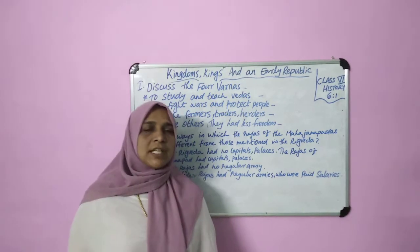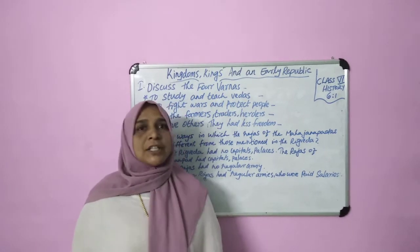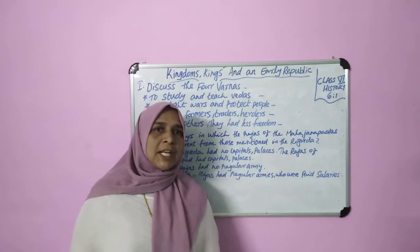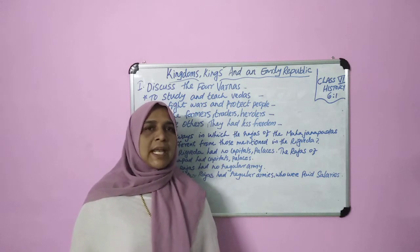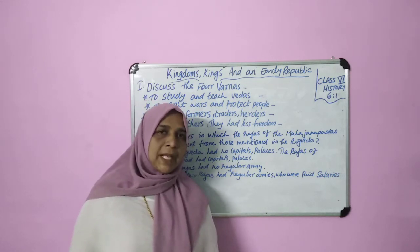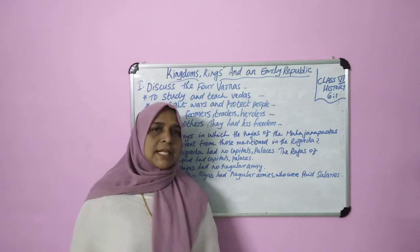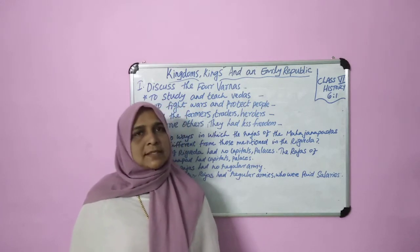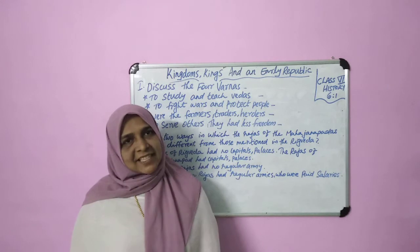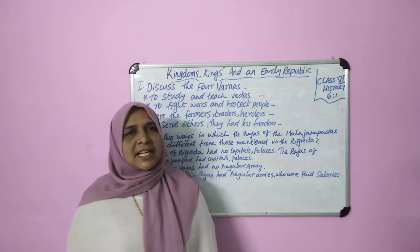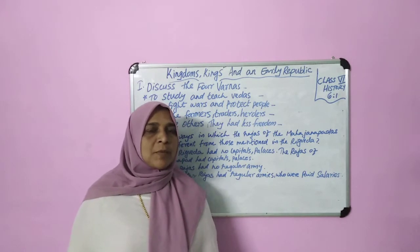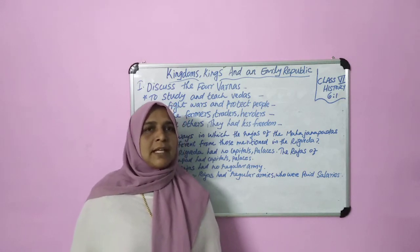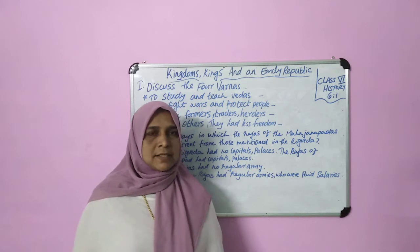Around 3000 years ago there were many different ways of choosing a raja. Some men became rajas by performing sacrifices like ashvamedha. Initially rajas were chosen by the jana, and some men performed sacrifices and became rajas. They then ruled the janapadas.